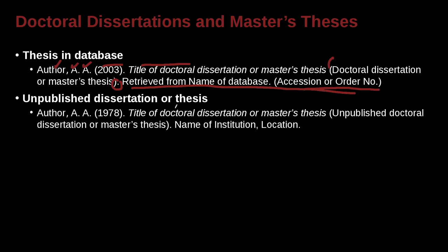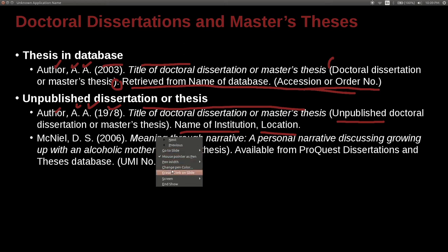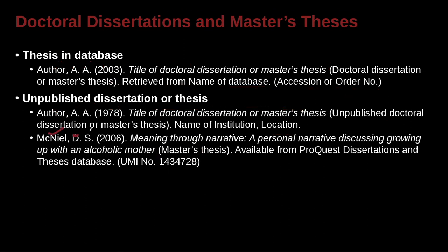For an unpublished dissertation or thesis, you include the author, date, title, and then say 'Unpublished Doctoral Dissertation' or 'Master Thesis,' followed by the name of the school and its location. For example, a master's thesis retrieved from ProQuest Dissertations and Theses Database would include that database name and the access number, since ProQuest has its own numbering system.